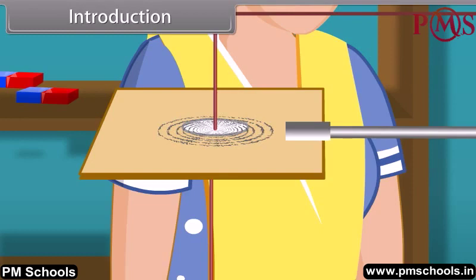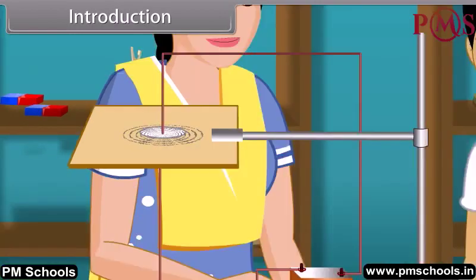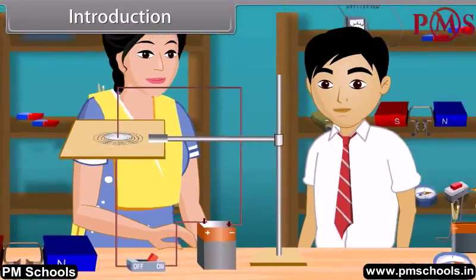She performed this experiment to show the magnetic effect of current. The iron dust particles arranged into the concentric circle pattern due to the magnetic field generated by the electric current. Students, today we'll study more about moving charges and magnetism.